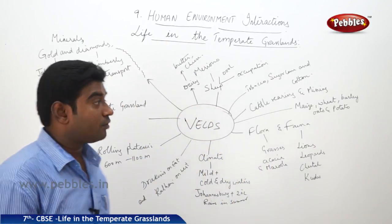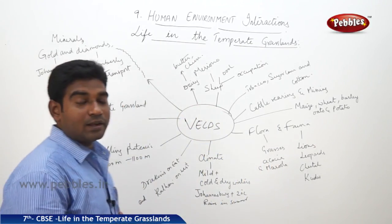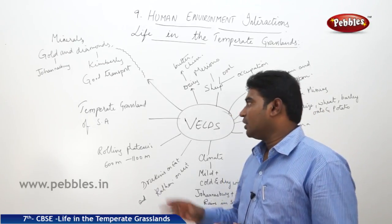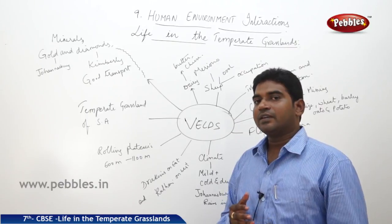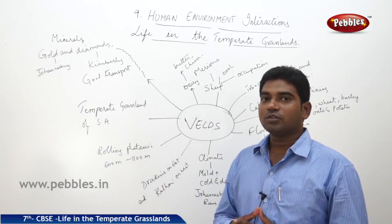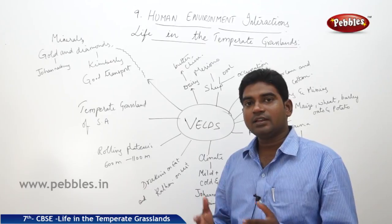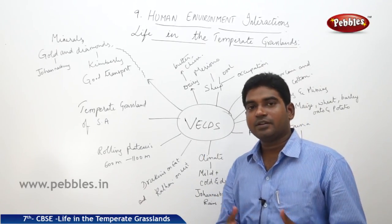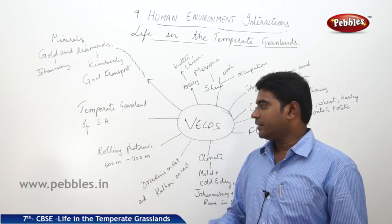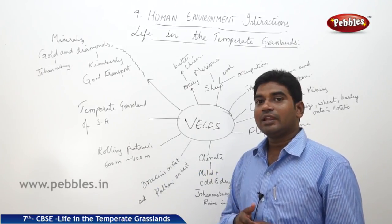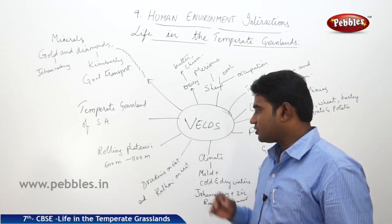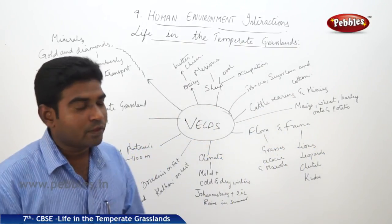Now we are going to look at the other case study of the grasslands. The entire world is covered with one-fourth of its area as grasslands. The second case study is about the Velds. The Velds are the temperate grasslands of South Africa. Grasslands are known by different names in different regions — they are known as Prairies in North America and Velds in South Africa. In South Africa, these are located on higher elevation plateaus, ranging from 600 meters to 1100 meters above sea level. They are bounded by the Drakensberg Mountains on the east and the Kalahari Desert on the west.